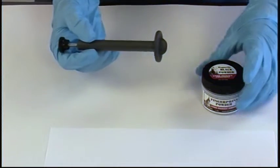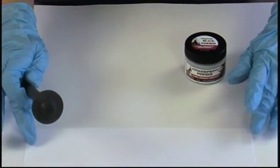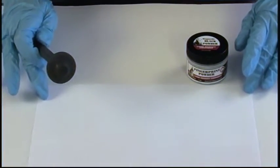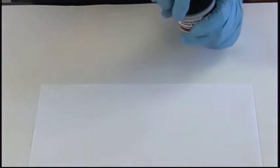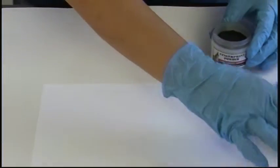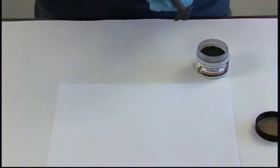We're going to start with it depressed so we can pick up our powder. On this blank sheet of white paper, we have some fingerprints to develop. Let's open up our powder, and with the plunger depressed so the magnet is at the base, pick up a fair amount of magnetic powder.